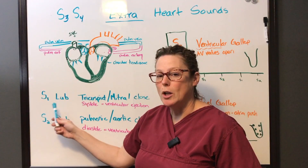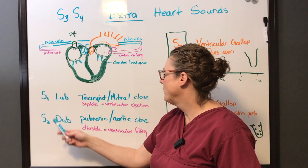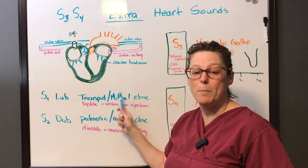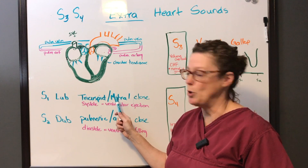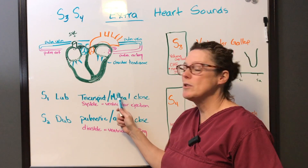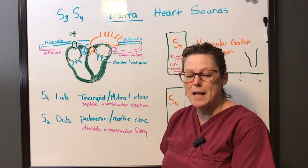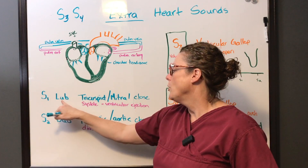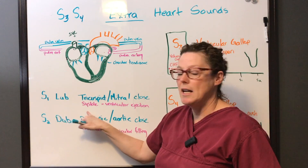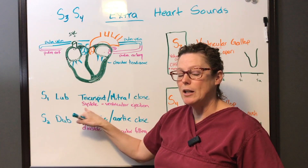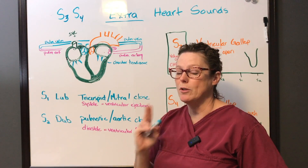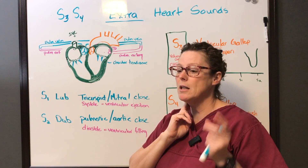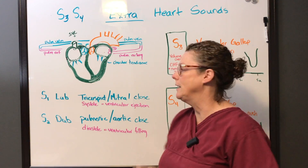S1 is our lub, S2 is our dub. S1 involves the tricuspid and mitral, or bicuspid as it's known. Those valves are closing, causing a snap, and that's our S1 sound. This coincides with systole and coincides with that pulse. So you can find S1 by palpating a pulse and auscultating.